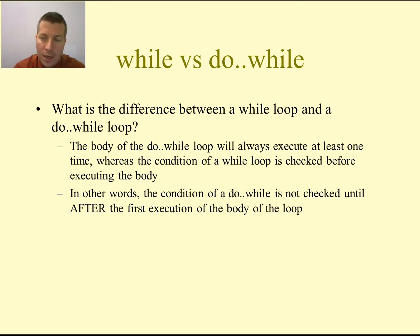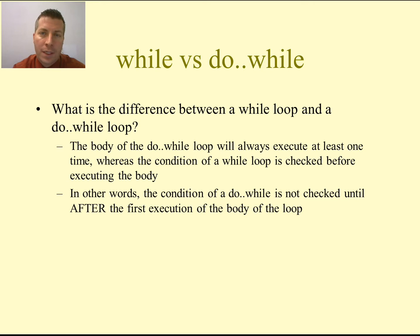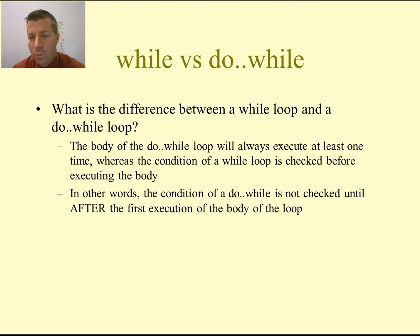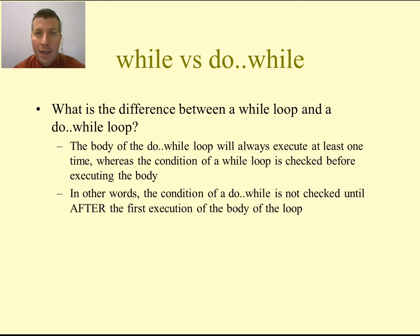What is the difference between a while loop and a do-while loop? Very simply, the only difference is that the body of the do-while loop is going to execute at least one time, whereas we have no guarantee that the body of a while loop will ever execute. The condition of a while loop gets checked before the first execution of the body, whereas the body of a do-while loop executes one time before checking the condition to see if it will execute a second time.